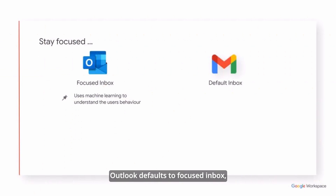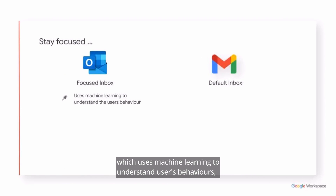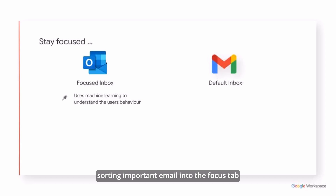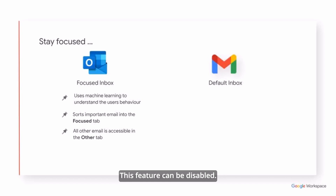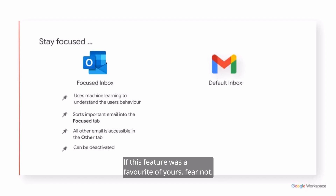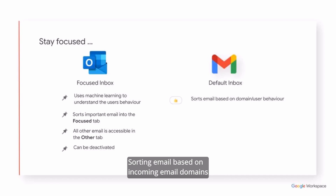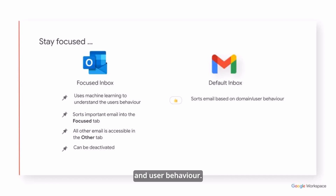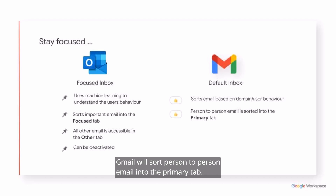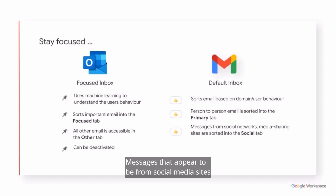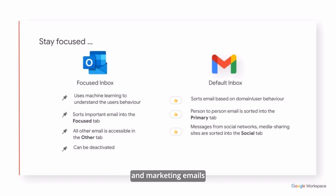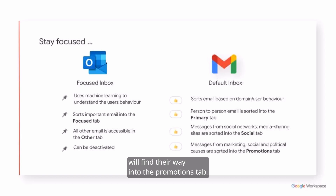Outlook defaults to a Focused Inbox, which uses machine learning to understand users' behaviours, sorting important email into the Focused tab and other mail into the Other tab. This feature can be disabled. If this feature was a favourite of yours, fear not. Gmail's default inbox works in much the same way, sorting email based on incoming email domains and user behaviour. When it learns your preferences, Gmail will sort person-to-person email into the Primary tab, messages from social media sites into the Social tab, and marketing emails into the Promotions tab.